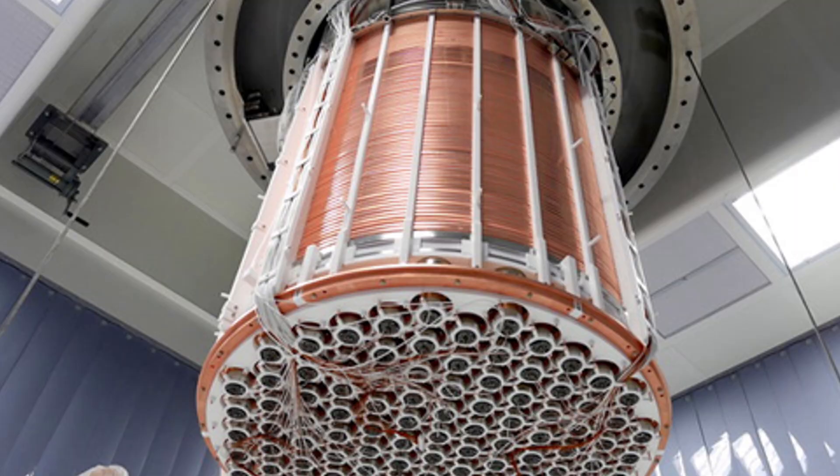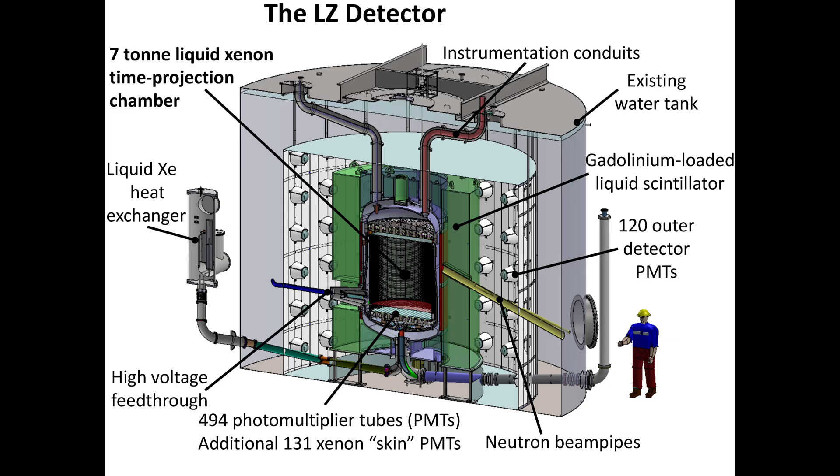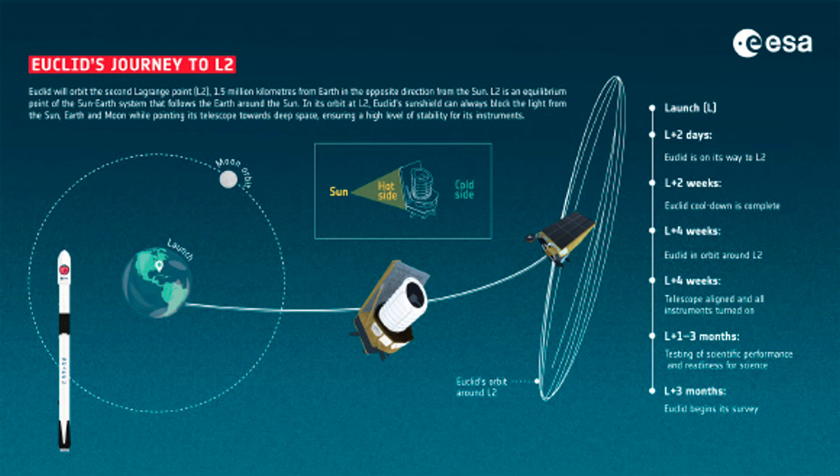Meanwhile, underground detectors like XENON1T and Lux Zeppelin are attempting to catch fleeting interactions between dark matter and normal matter. Additionally, upcoming missions like the Euclid Space Telescope aim to map dark matter on a larger scale by measuring the shapes of distant galaxies and how they're distorted by dark matter's gravitational effects.